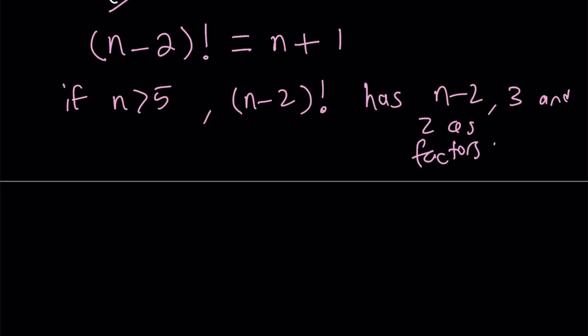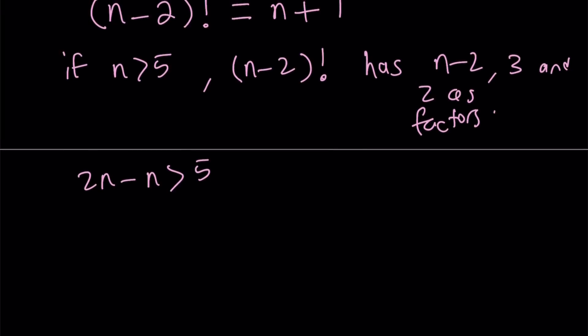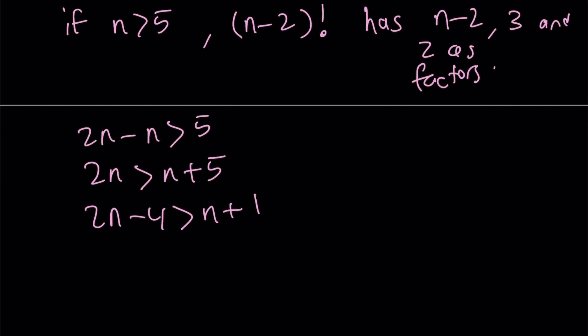I want to compare n minus 2 factorial to n plus 1. Since n is greater than 5, I can write it as 2n minus n is greater than 5. Then 2n is greater than n plus 5. And then 2n minus 4 is greater than n plus 1. I can factor out the 2 and write this as 2 times n minus 2 is greater than n plus 1.